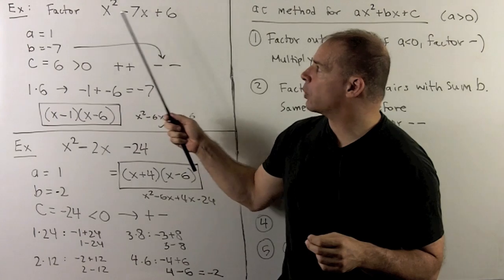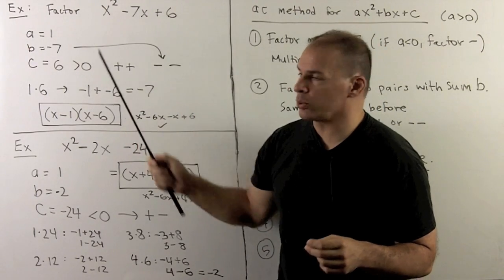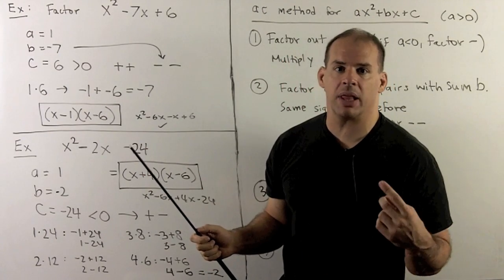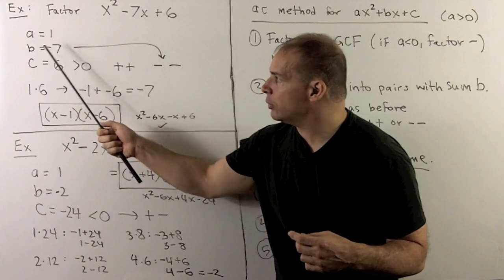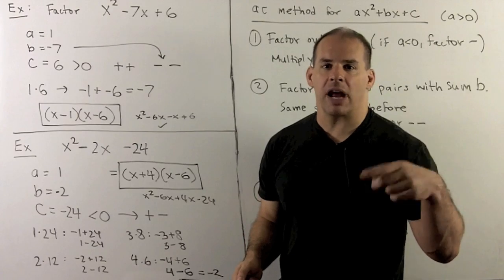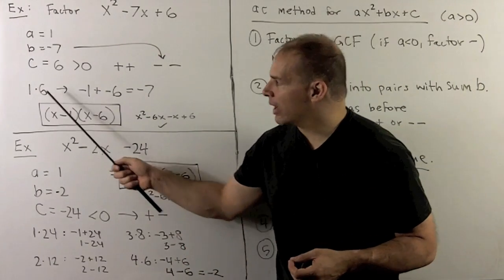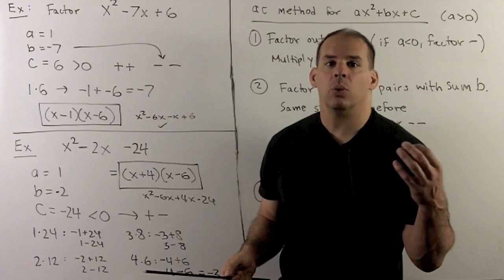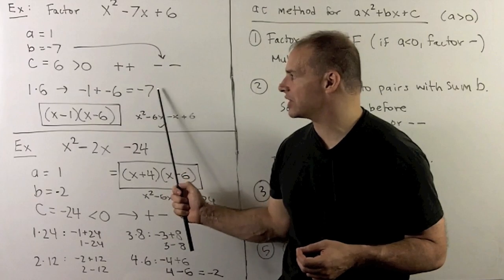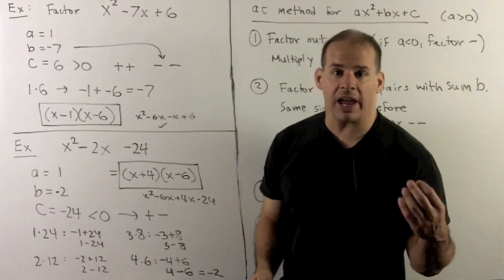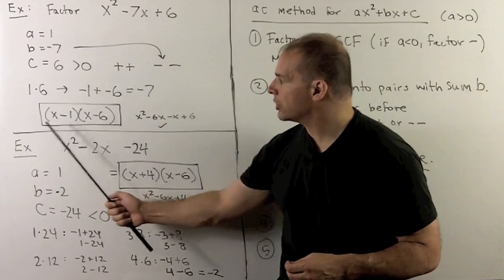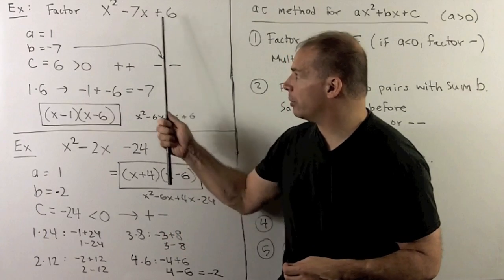Next, let's factor x squared minus 7x plus 6. We have a equals 1, b is minus 7, c equals 6. Because c is positive, the sign pattern is either plus-plus or minus-minus. We check b, which is negative, so it's minus-minus. I consider factorizations of 6 into pairs: 1 times 6 or 2 times 3. Since the pattern is minus-minus, I consider minus 1 minus 6; I get minus 7, which equals b. So we factor our polynomial into x minus 1 times x minus 6. We check our work by FOILing to confirm we get back our original polynomial.